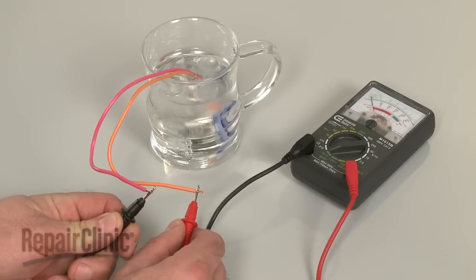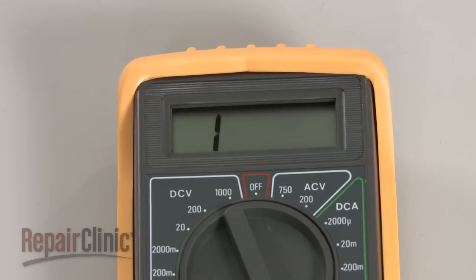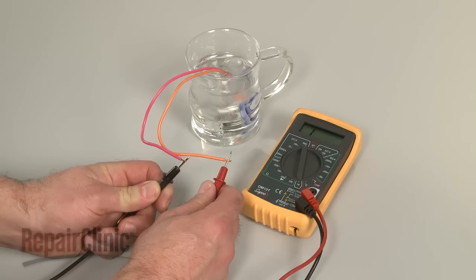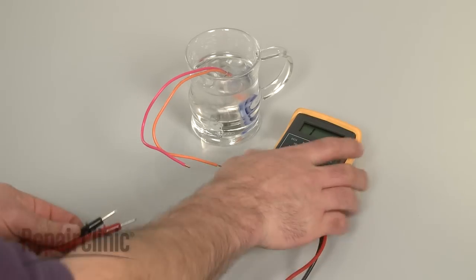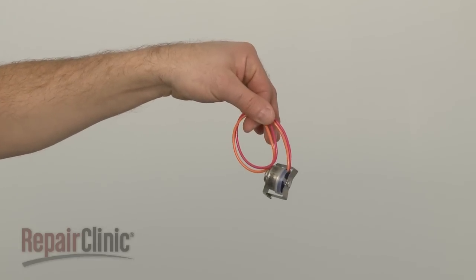If the needle does not move, or the digital display does not change significantly, there is no continuity, which means the thermostat has failed and will need to be replaced.